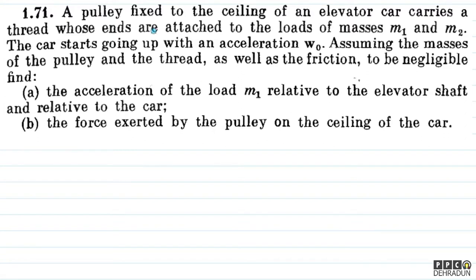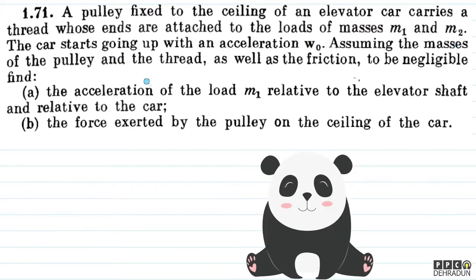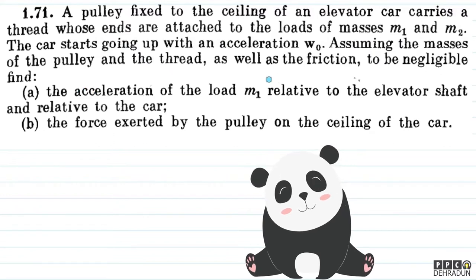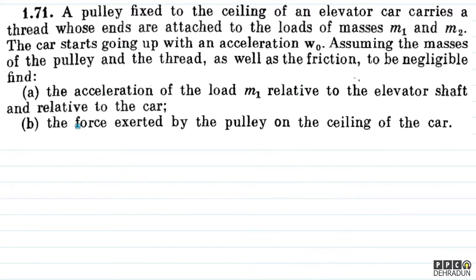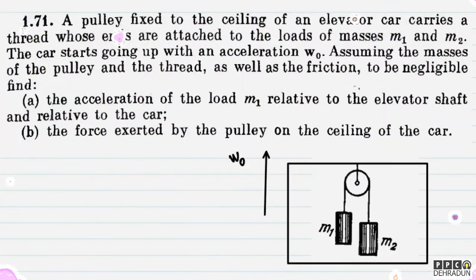The question says: a pulley fixed to the ceiling of an elevator car carries a thread whose ends are attached to the loads of masses M1 and M2. The car starts going up with an acceleration W0, assuming the masses of the pulley and the thread as well as the friction to be negligible. Find — there are two parts. First part is the acceleration of the load M1 relative to the elevator shaft and relative to the car, and the second part is the force exerted by the pulley on the ceiling of the car.